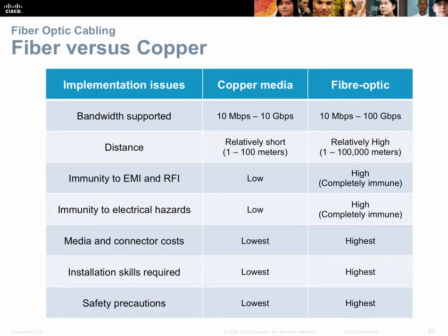Fiber versus copper: fiber wins in every possible comparison except one — cost. Fiber optic currently costs three to five times more than copper cabling at a conservative estimate, but it does provide many benefits.